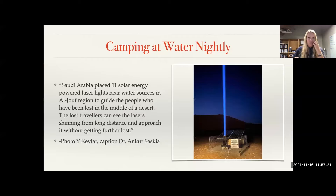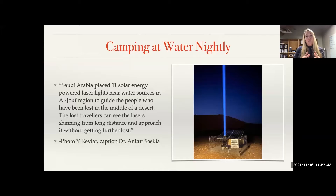In doing research for this presentation, I actually learned that the Saudi government has installed solar-powered laser lights to guide people who are lost in the Al Juf region to water sources, so that at night they can see these laser beams and walk to those places. This has been helpful in making sure people don't get lost in the desert without water — and it was only installed a couple of months ago.